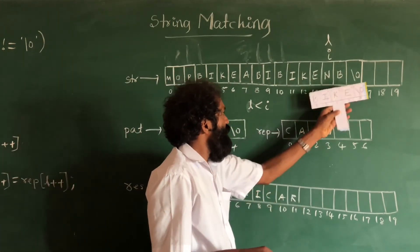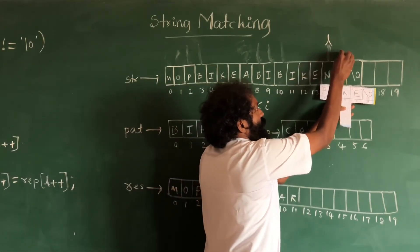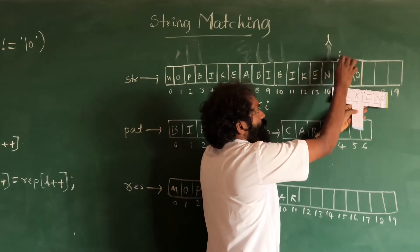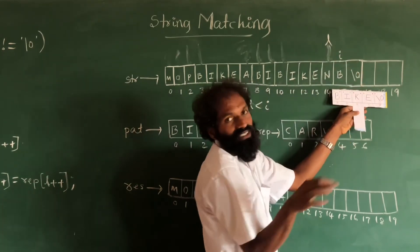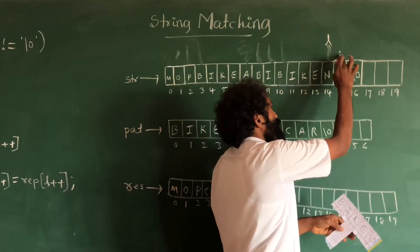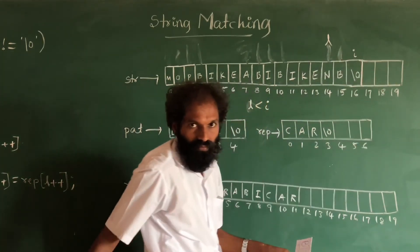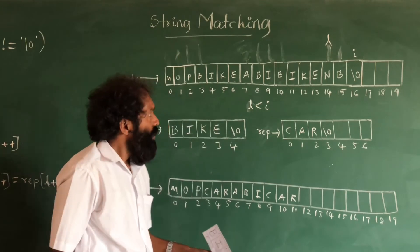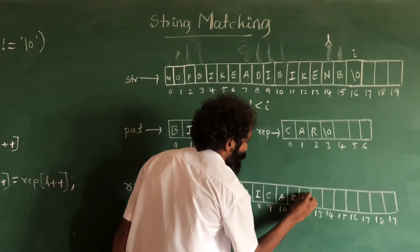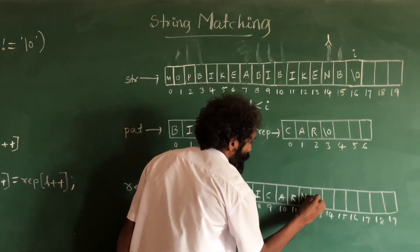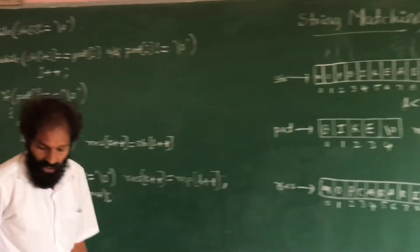Now it is different, so increment i. Again different. Now it is same but the second character is different, so when you come here it stops. Now remaining these two characters we need to copy. That is the complete walkthrough of the algorithm.